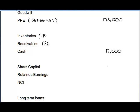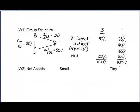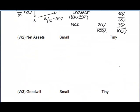The share capital of the parent company is taken directly to the statement of financial position, while the share capital of our two investments goes to the net assets working. When we get to the net assets working we have to be careful: for Small there's an SFP date and an acquisition date.